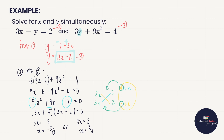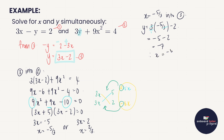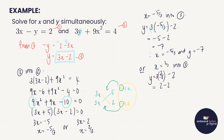Now to get our solutions for y we substitute into equation three where y is already on its own. Substituting x equals minus five over three: y equals three times minus five over three minus two — the threes cancel, giving minus five minus two, which is minus seven. So x equals minus five over three and y equals minus seven. Or substituting x equals two over three: y equals three times two over three minus two — the threes cancel again, giving two minus two equals zero. So x equals two over three and y equals zero.